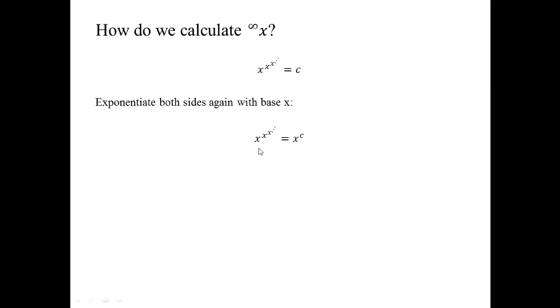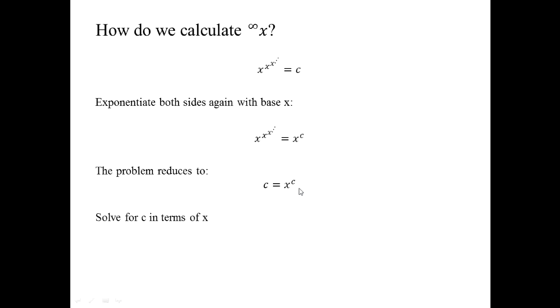On the left-hand side after exponentiating with base X again, I get exactly the same expression as before, but on the right-hand side I get X to the C. Since the left-hand sides are the same, I can equate C and X to the C. Now this whole problem reduces to solving for C — finding that converging number in terms of the base X.